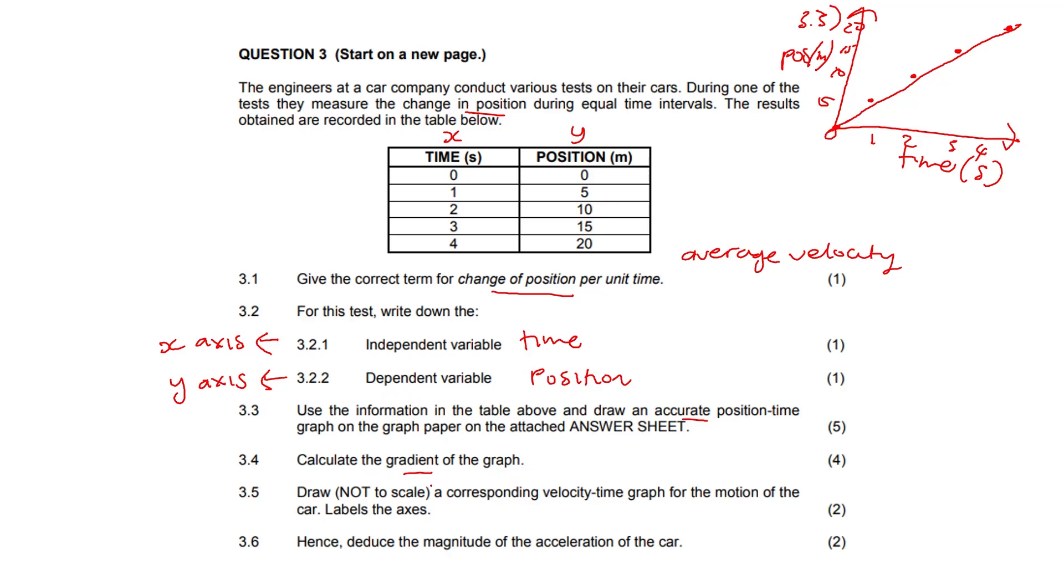3.4. Calculate the gradient of the graph. This is where your math skills come in. So you have to start with your formula. Gradient formula is Y over X. Choose any point on the graph. So you say Y2 minus Y1 over X2 minus X1. You choose any two points on the graph. So let's choose this point and this point for fun. I'm going to continue the calculation on this side. So we have our Y is 20 and our X is 4 and then minus our second Y is 5 and our second X is 1. And then our gradient is 5.